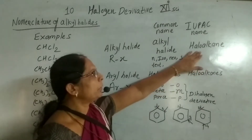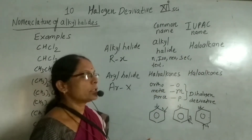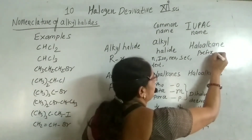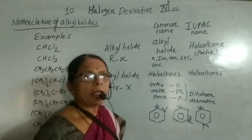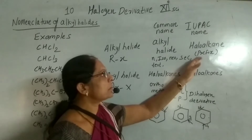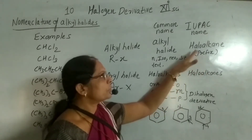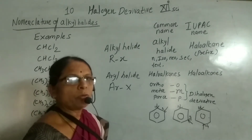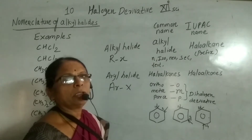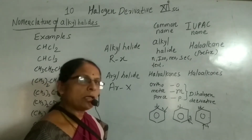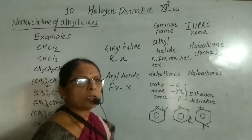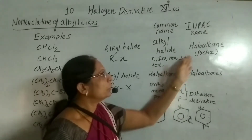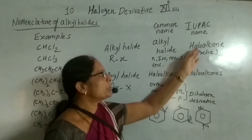In the IUPAC name, the alkyl halide is named as a haloalkane. Remember, halogen is used as a prefix — it is not used as a suffix. Though in alkyl halides, halogen is the functional group, its name is given by considering halogen as a prefix. We identify the halo group and also identify the number of the carbon to which halogen is attached. That number is given in the haloalkane name where required.